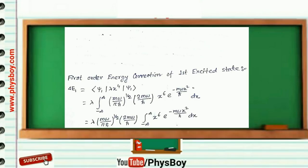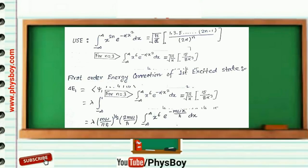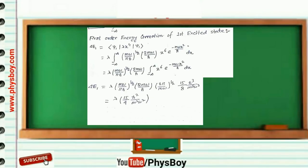Similarly, for the first-order energy correction of the first excited state, we insert the wave function of the first excited state. The only difference is that here an x to the power 6 term is present instead of x to the power 4. By putting n equals 3 in the general integration formula, we get delta E1 equal to 15 lambda h-bar squared by 4 m squared omega squared. So the ratio delta E1 by delta E naught is 5. In the JEST exam you must answer in 4-digit integers, so the answer is 0005.